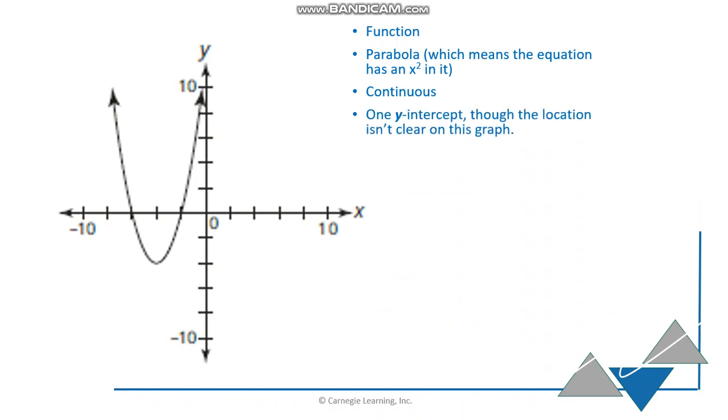There is one y-intercept, one place where it crosses the y-axis, but not really sure where that is in this case. There are two x-intercepts, one at negative 2, 0, and the other at negative 6, 0.